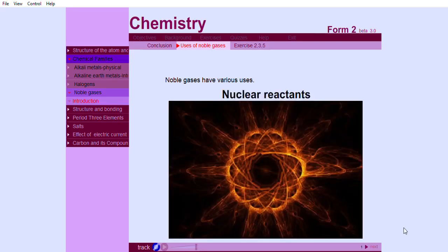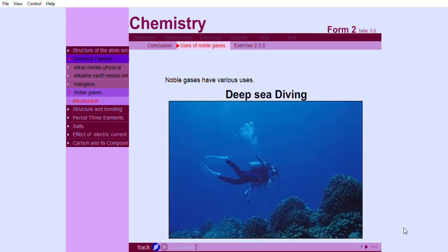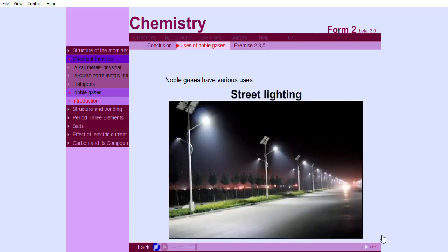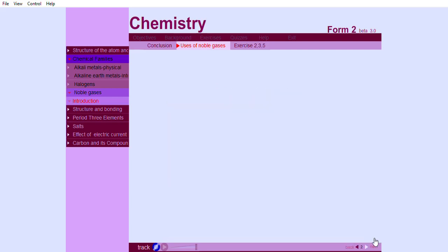Neon is used in street lighting, in advertising lights, and as a refrigerant. Argon is used in thermal gas.